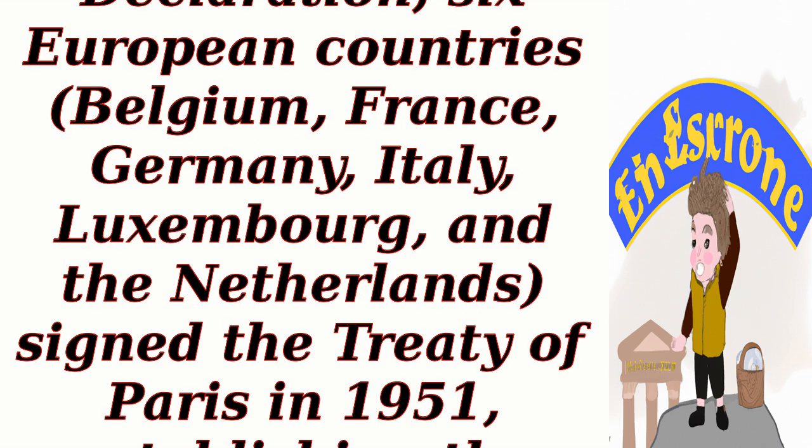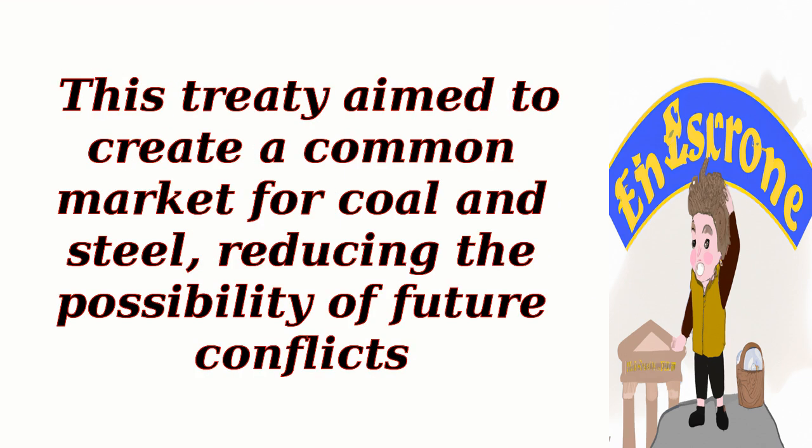Treaty of Paris, 1951. In response to the Schumann Declaration, six European countries — Belgium, France, Germany, Italy, Luxembourg, and the Netherlands — signed the Treaty of Paris in 1951, establishing the European Coal and Steel Community, ECSC. This treaty aimed to create a common market for coal and steel, reducing the possibility of future conflicts.